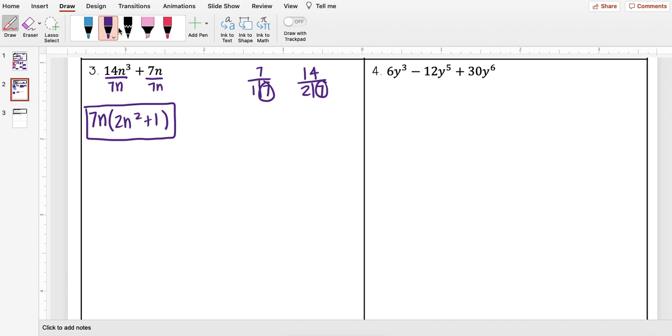For this very last one it's a little bit different. It has three terms but that's okay we're still going to go through the same process. So I'm going to start with my numbers. So I know my factors for 6: 1, 6, 2, and 3.